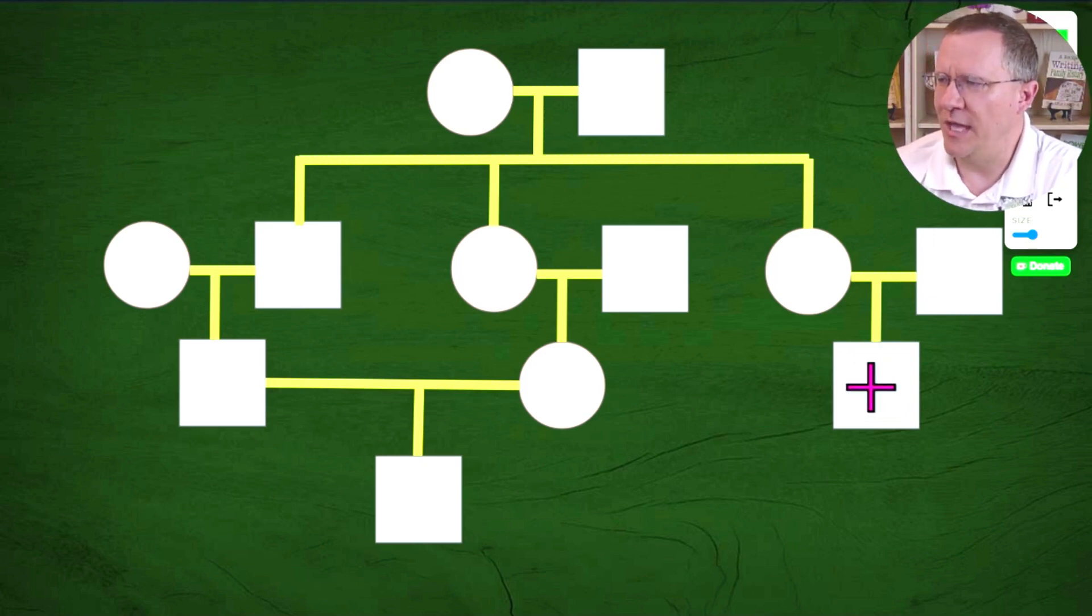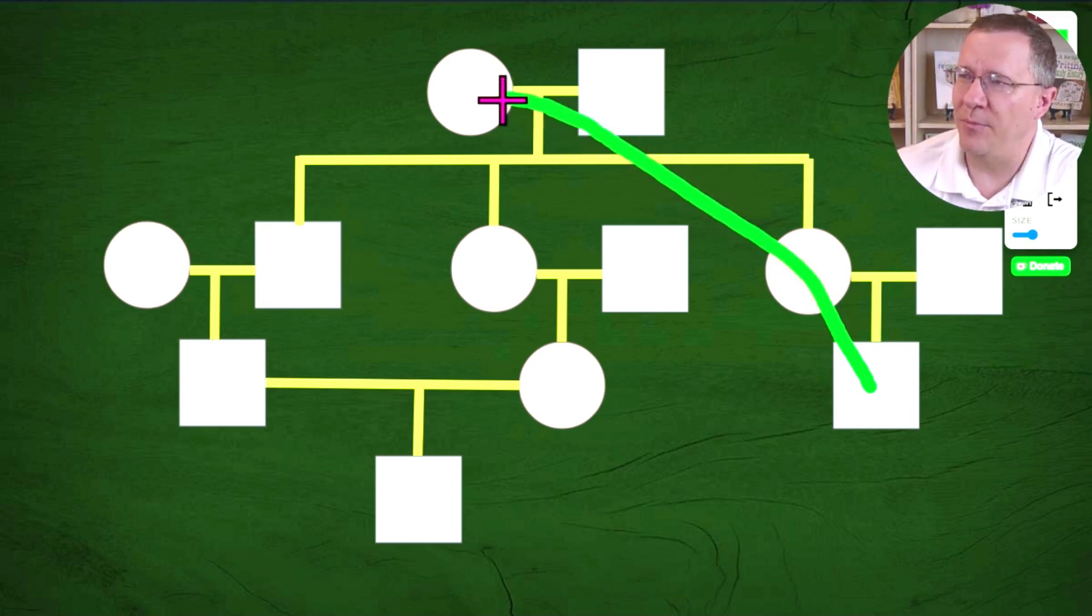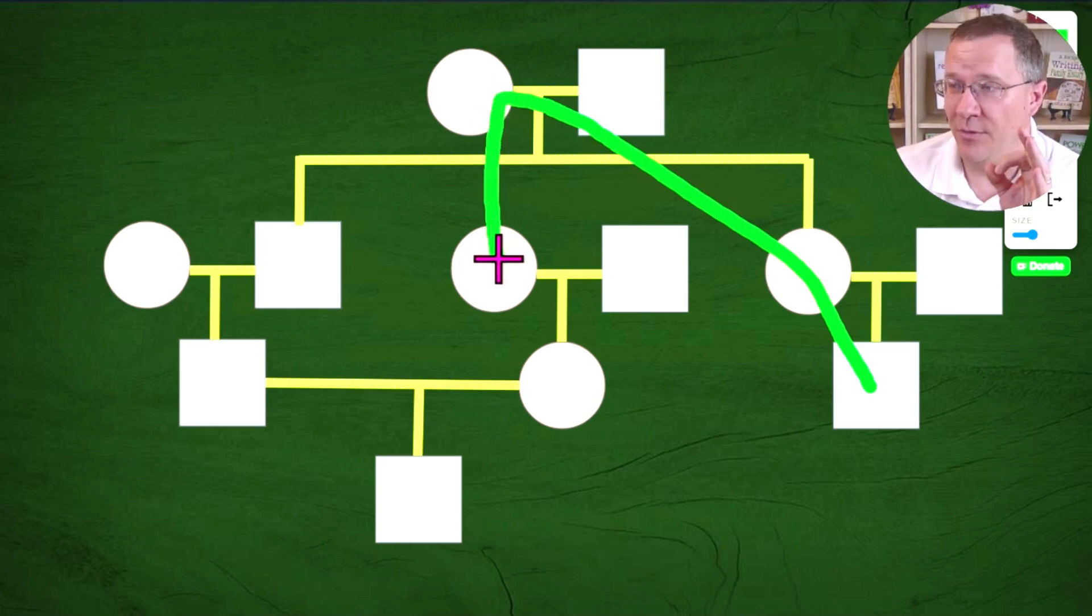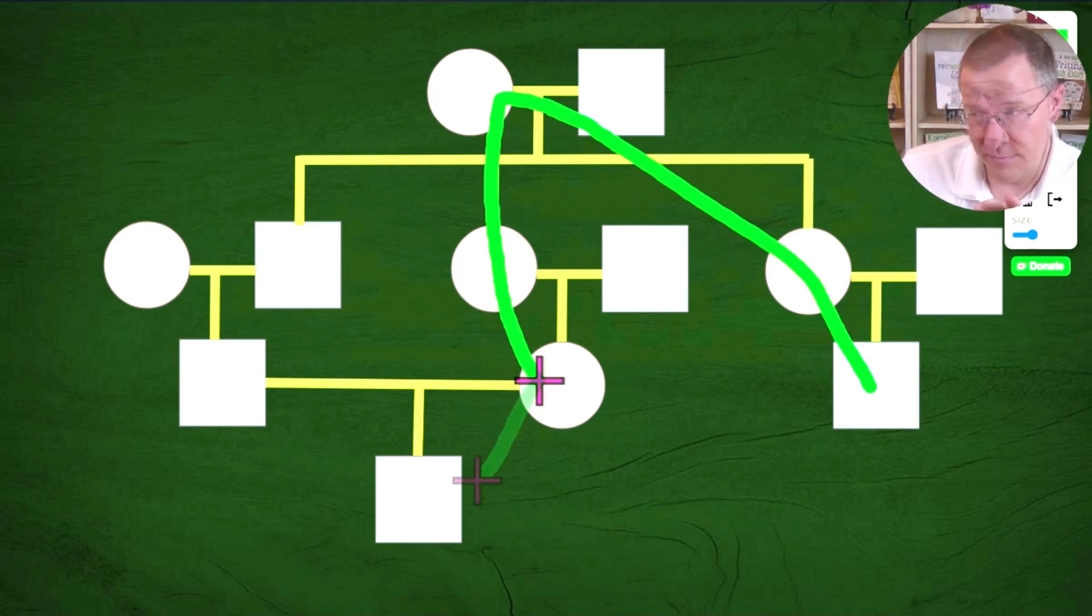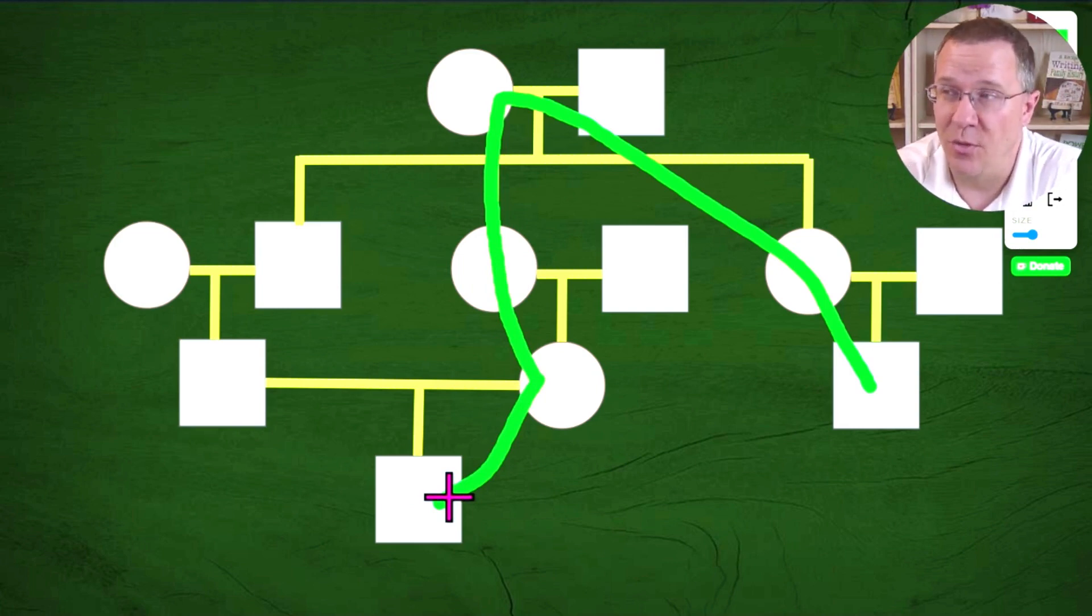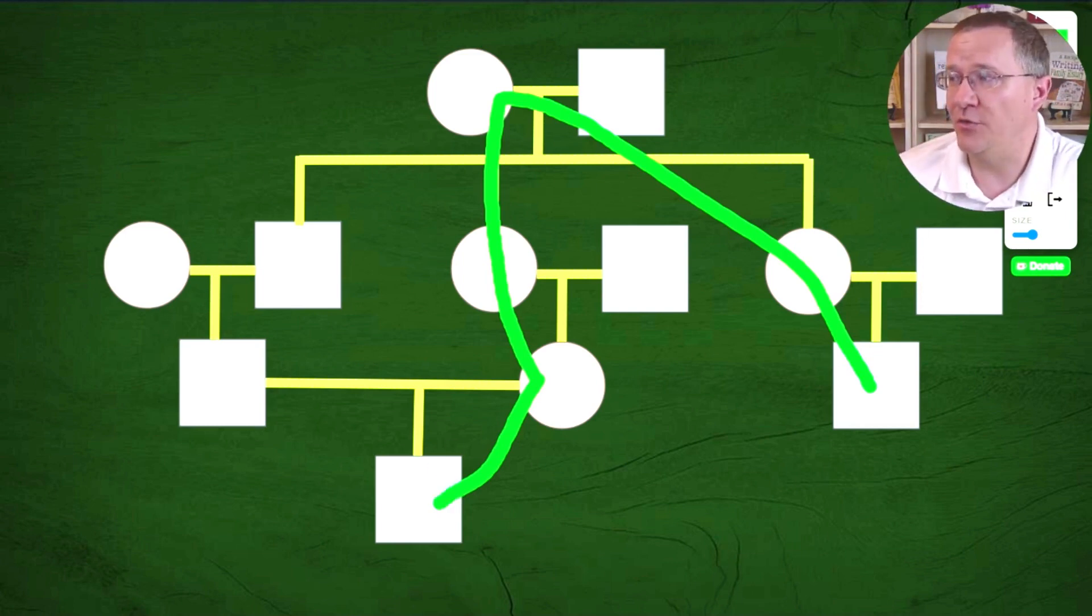We're going to draw a line first off through obviously her mom or this person's mom, his mom. And it goes up to the grandparents. So we have an ancestral couple. Now we're going to start and go down through their daughter. This would be the viewer's aunt in this case, this would be the first cousin once removed. And that's one path of relationship.